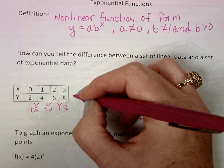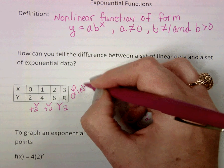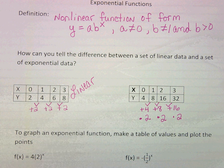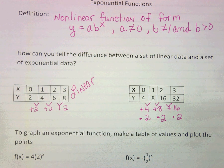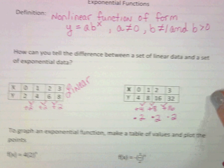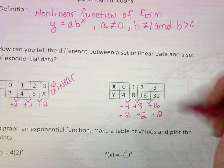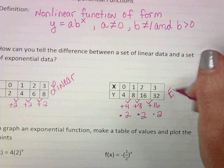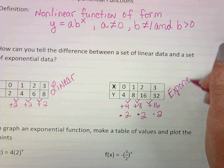This set of data over here is a linear set of data. It's increasing by 2. It has that constant rate of change of 2 or 2 over 1. Over here, though, this is a multiplication pattern. And so we would consider this exponential.